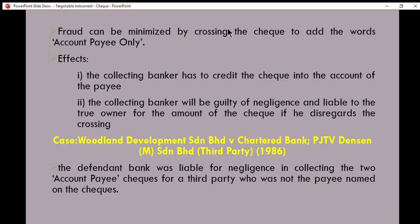Fraud can be minimized by crossing the check and adding the words 'account payee only.' The effect is that the collecting banker must credit the check into the account of the payee whose name is written on the check. The collecting banker will be guilty of negligence and liable to the true owner for the amount of the check if they disregard the crossing. In other words, the collecting banker will only pay the check to the account of the payee named on the check.